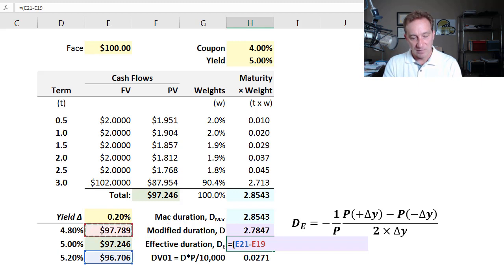And I'll divide that by two times the yield shock. Because which is the same as the difference between 5.2 and 4.8. So that denominator is 40 basis points. And that's just consistency. I'm taking the difference between two prices that differ in terms of the yield by 40 basis points. So my denominator needs to be consistent.